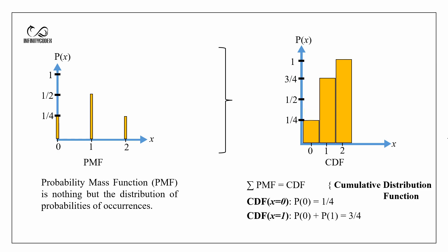The cumulative distribution function for the probability of getting heads 1 time is the probability of getting heads 0 times plus the probability of getting heads 1 time, that is 3/4. The CDF for getting heads 2 times is probability of 0 heads plus probability of 1 head plus probability of 2 heads, which equals 1, because the summation of all probabilities is always 1.